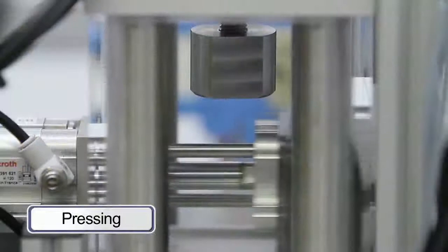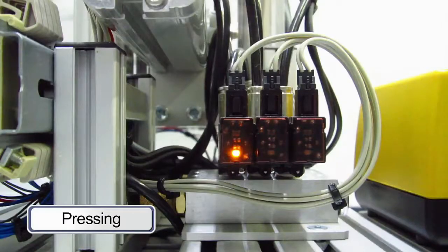In the pneumatic press, the upper and lower CUBE halves are connected to each other.